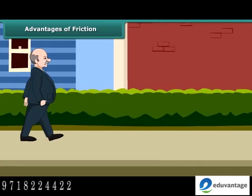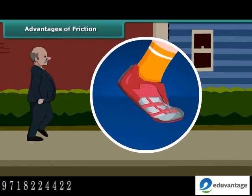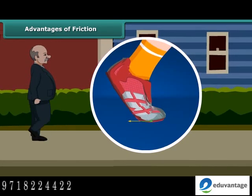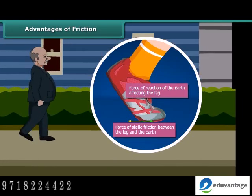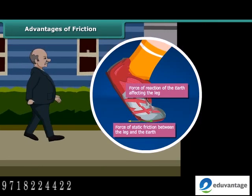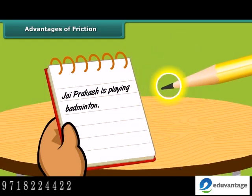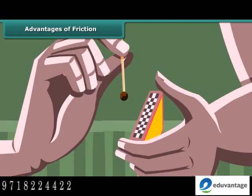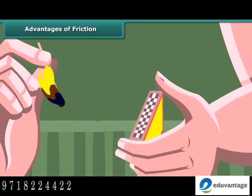Friction is both good and bad. We are able to walk because friction prevents us from slipping — when we push the ground with our foot, friction provides a forward reaction and pushes us forward. We are able to write because there is friction between the tip of a pencil and the paper. Lighting a matchstick is another useful application of friction — when we rub a matchstick against the rough side of the matchbox, the friction between them produces heat.